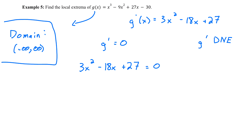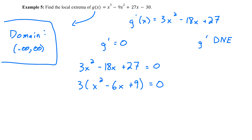We can go ahead and solve this quadratic equation — I think it's easiest to solve by factoring. All of these terms have a common factor of 3, so I'm going to factor that out. That leaves me with x squared minus 6x plus 9 equals 0. If I think about two numbers that multiply to positive 9 and add to negative 6, those would be negative 3 and negative 3. So I can factor this as 3 times (x minus 3) times (x minus 3) equals 0.